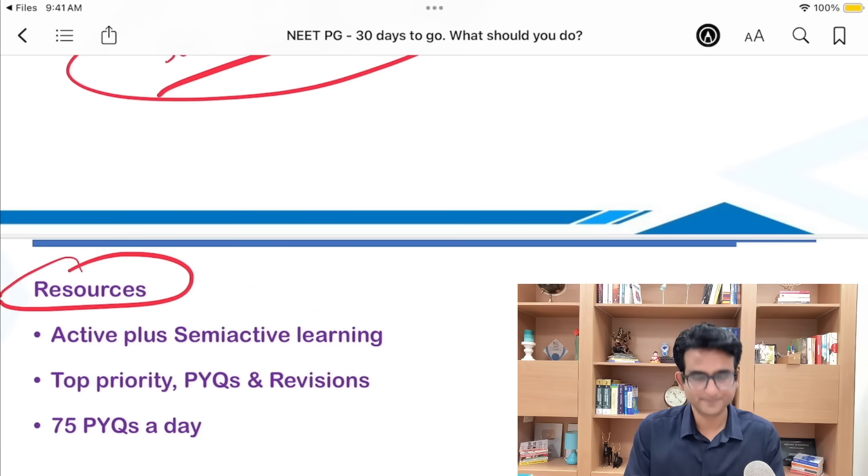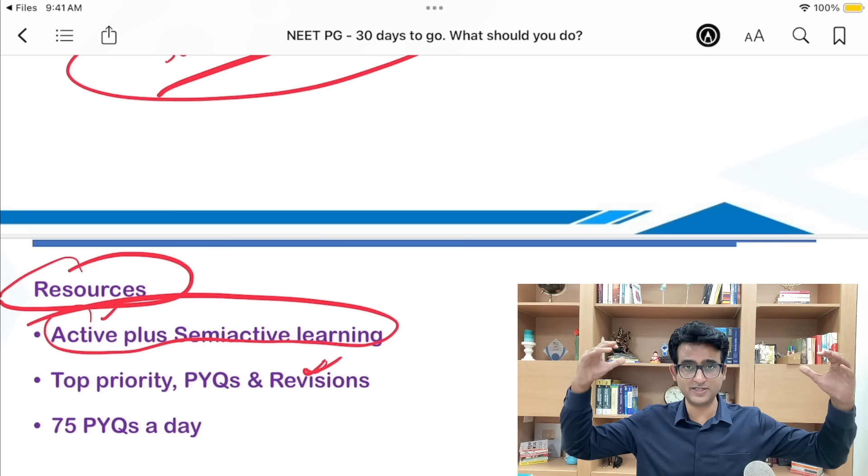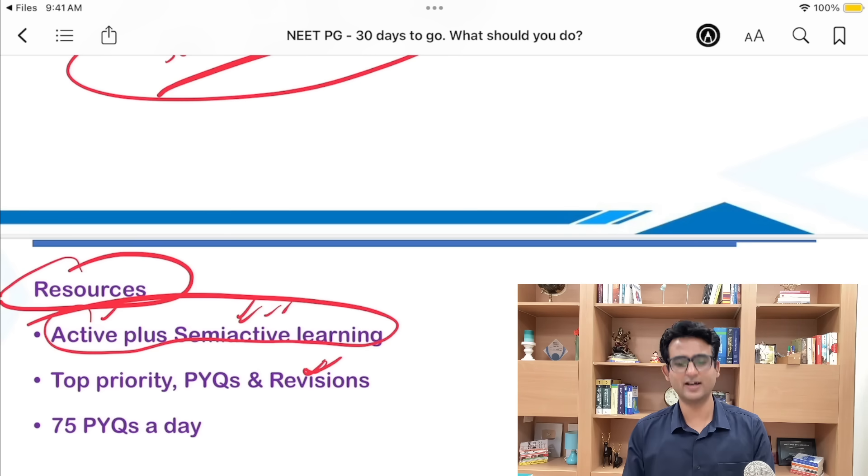What should you be doing? As we move towards exam, we have to revise, revise, and revise. Do active plus semi-active learning. What do I mean by semi-active learning? Active learning is when you are reading, when you are revising yourself, when your concentration is at its peak. When you start getting a bit tired in the evening hours, use the tests and discussions that we are doing.